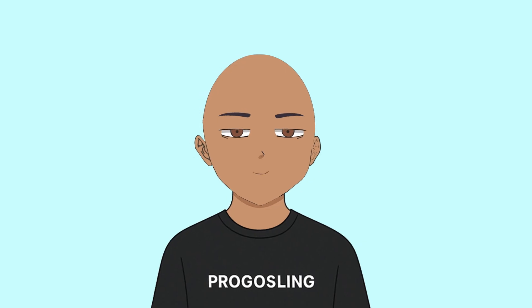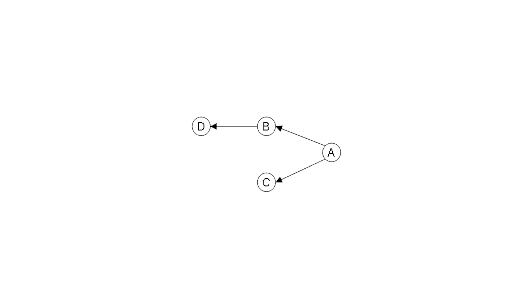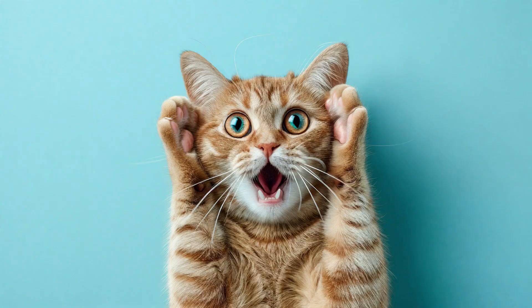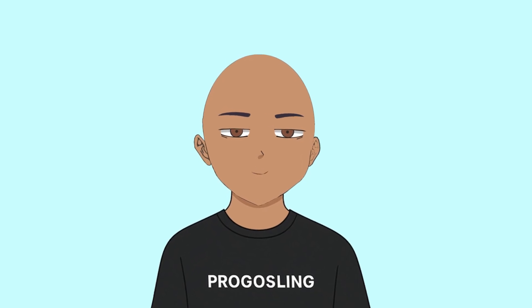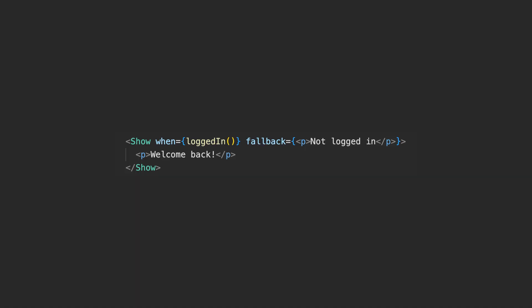And then comes Solid. It has a dependency graph based on signals. It says: I'll update only the parts of the DOM that actually depend on changed signals. No recreating components, no building a new virtual DOM. Just updating what's needed, when it's needed.